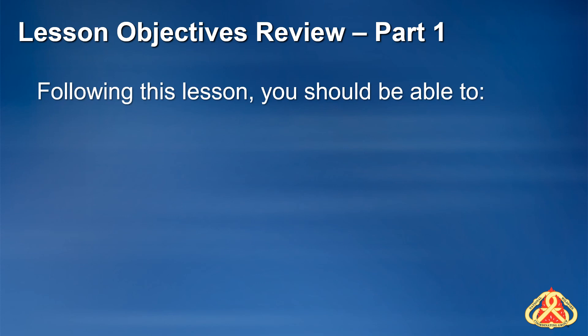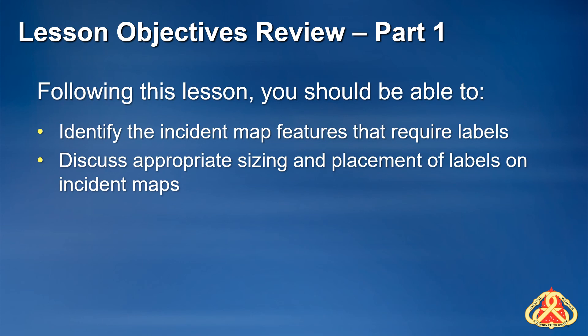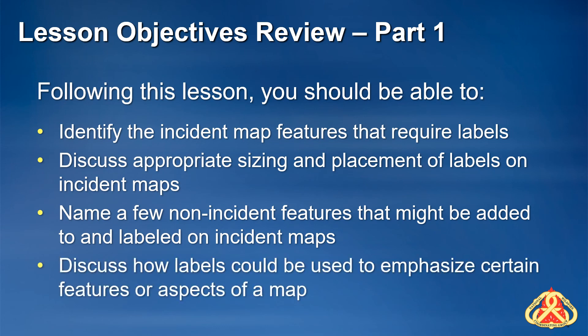Let's review. You should now be able to identify the incident features that require labels on incident maps and which incident features can but may not always be labeled. You should be able to discuss general guidelines and best practices for the placement and sizing of labels on incident maps, name some non-incident features that may be added to and labeled on incident maps, and discuss how labels can be adjusted to emphasize certain features or aspects of a map. This concludes part one of the labeling and annotation lesson. Please proceed to part two.